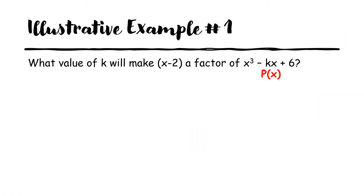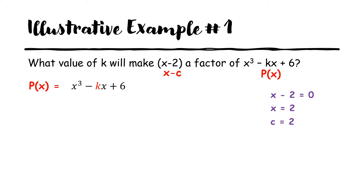Our p(x) is x³ minus kx plus 6, and x minus 2 is x minus c. We're going to solve for c by equating x minus 2 to 0, giving us x equals 2, so c equals 2. We then replace all the x variables with 2. When we do that, p(c) becomes 0, so p(x) is replaced by 0 since p(c) equals 0 means x minus 2 is a factor.